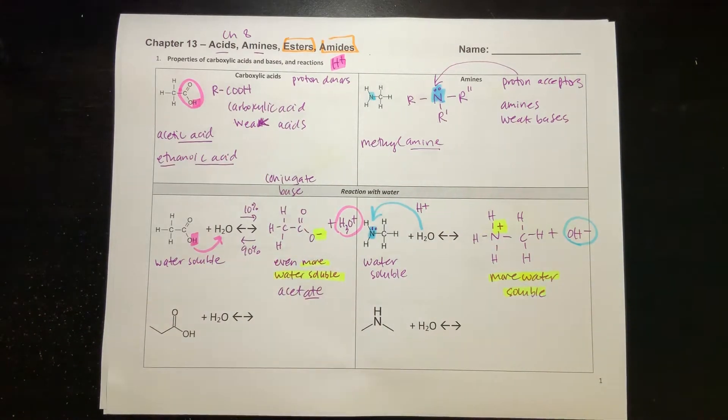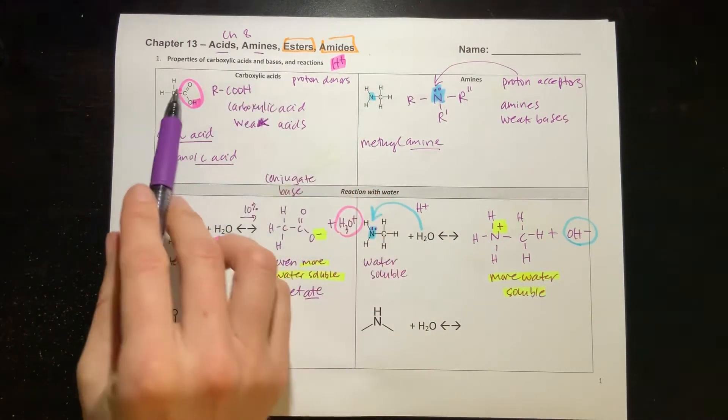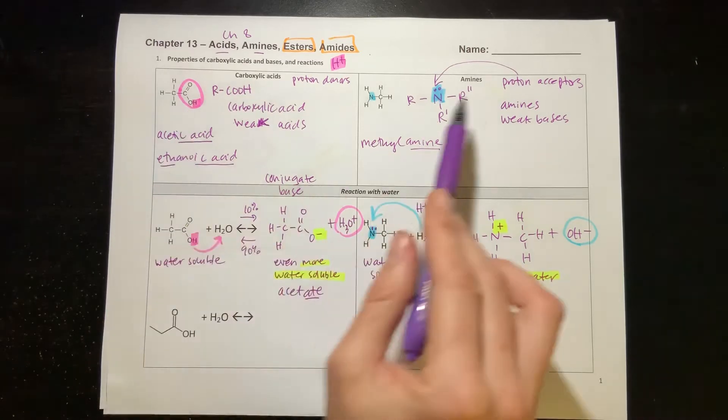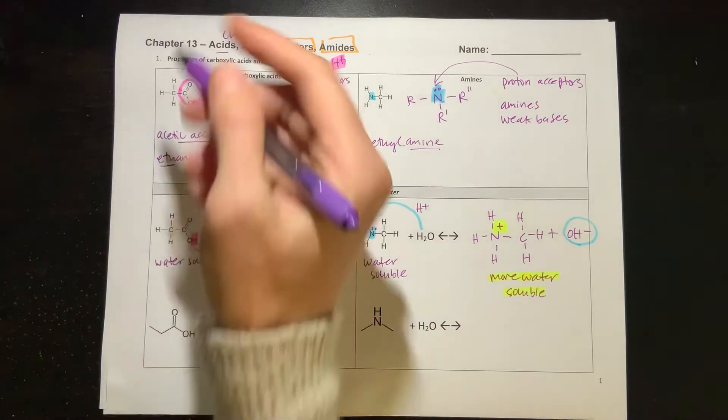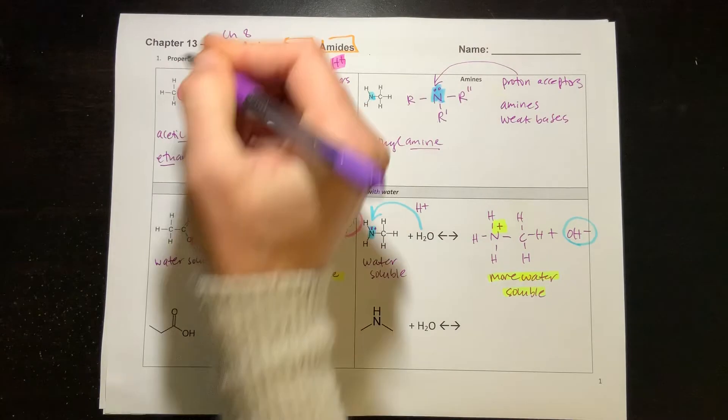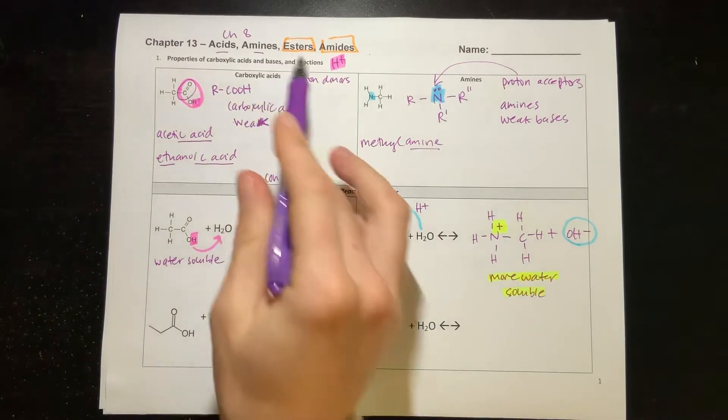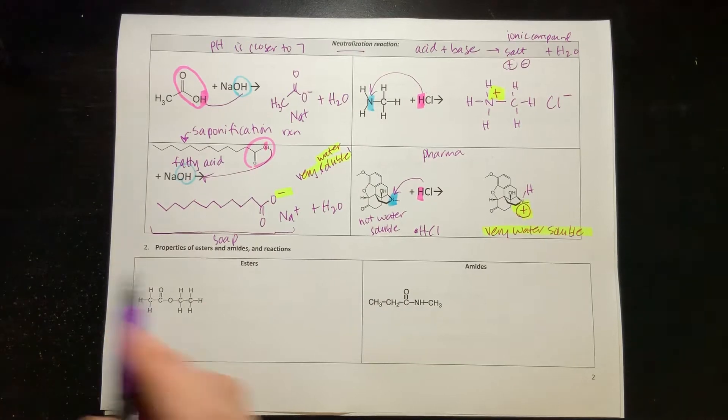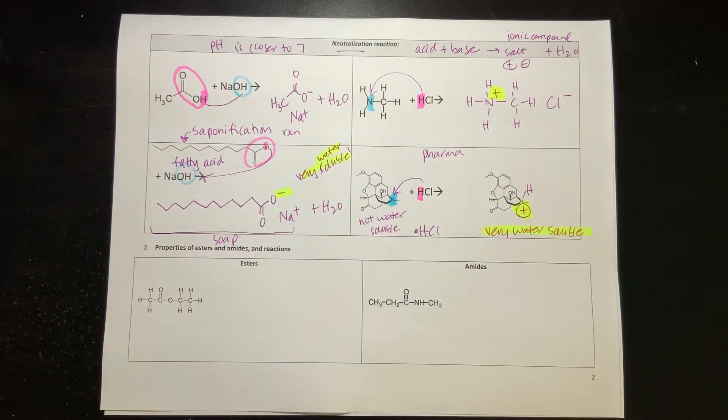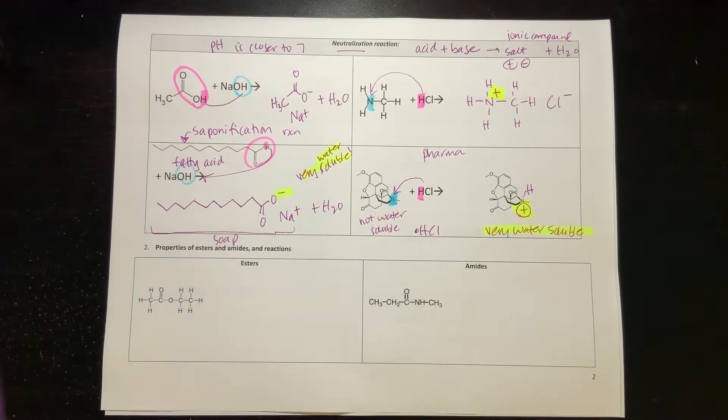We had looked at our acids with this carbonyl with an O, and amines with a nitrogen. We're going to see that carbonyl, this C double bond O, show up again in both esters and amides. We had looked at the neutralization reactions of acids reacting with bases, and so now we want to introduce esters and amides.